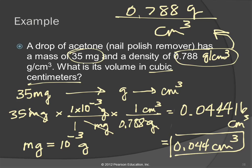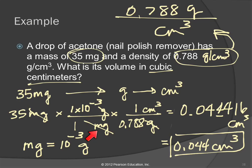A student asks about significant figures. The answer has 2 significant figures. The leading zeros — both the zero before the decimal and the zero after the decimal — are not significant. Leading zeros are never significant whether before or after the decimal point. So we count the first 4 and the second 4, giving us 2. Our initial number, 35, had 2 significant figures, and that's what limits the sig figs in our answer.